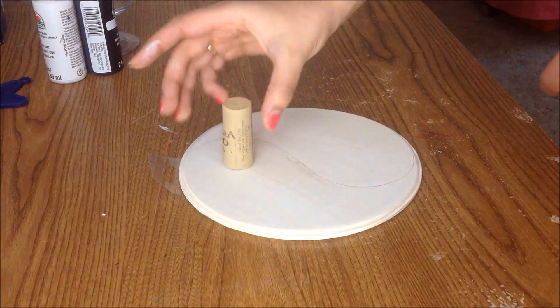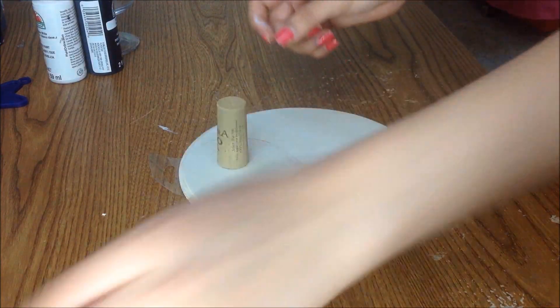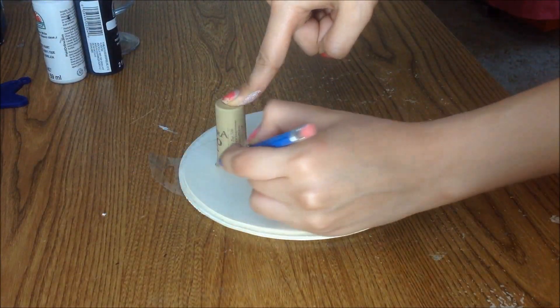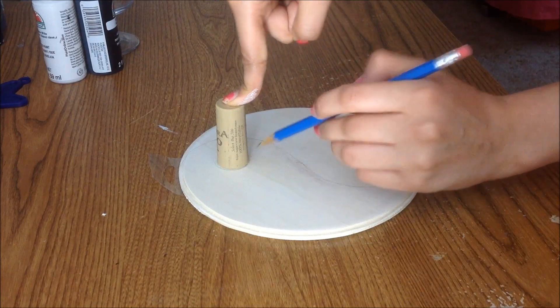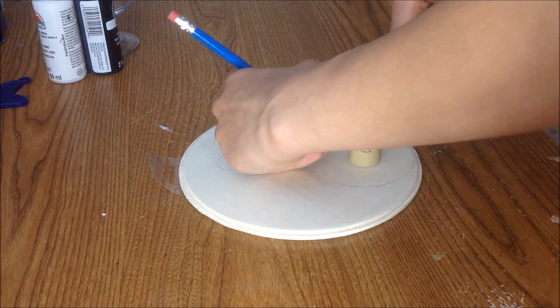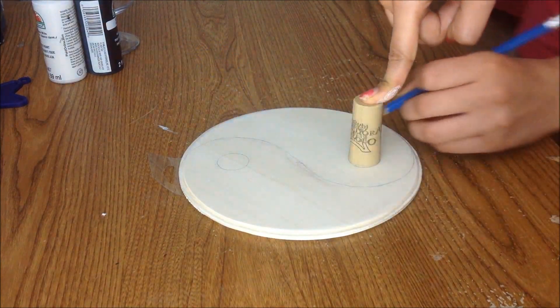Next, you're going to take something that has a smaller circle. And yes, I used a wine cork because that was the closest thing at my desk because I was using it for another DIY. Just take the wine cork or whatever circle object you use and lightly trace out a circle to create the little circle within the yin and the yang.